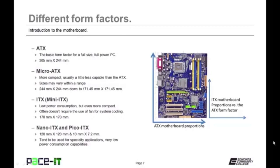The next main form factor category is the ITX, also called the mini-ITX. This is a low power consuming form factor, even more compact than the micro ATX. The ITX form factor often doesn't require a fan for system cooling. The standard size is 170mm by 170mm. Special mentions include the Nano-ITX at 120mm by 120mm, and the Pico-ITX at 10mm by 7.2mm — that's tiny. These tend to be used for specialty applications and have very limited capabilities.